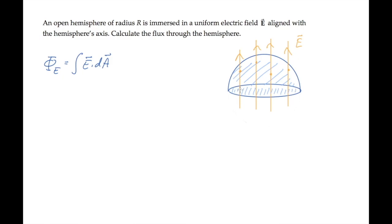Those two fluxes are equal in magnitude. Phi sub E through the top hemisphere equals phi sub E through the circular area on the bottom.